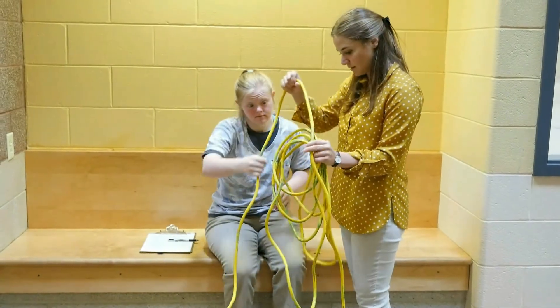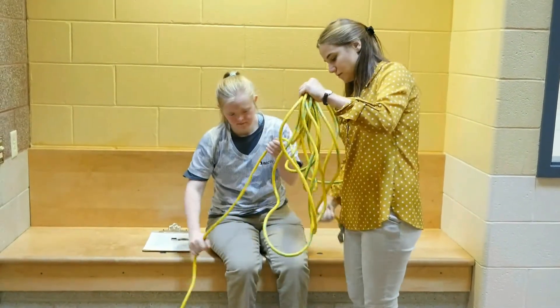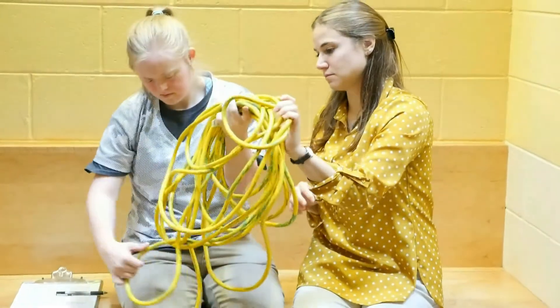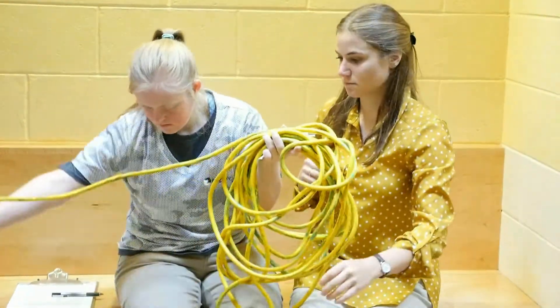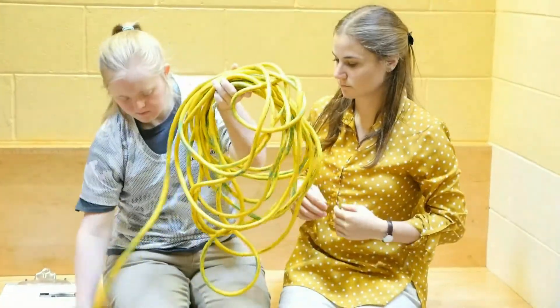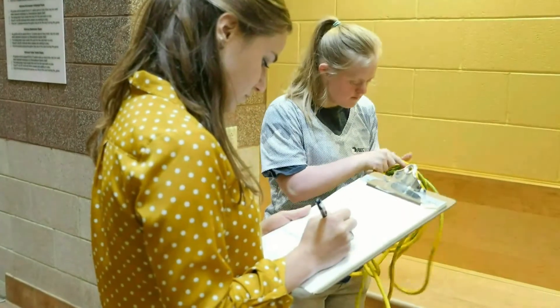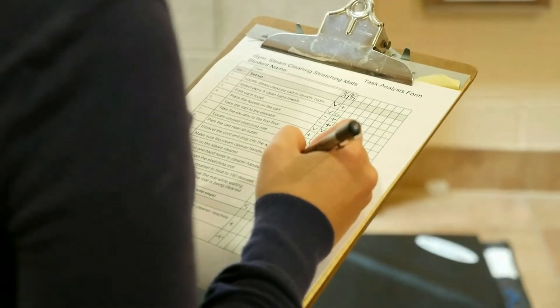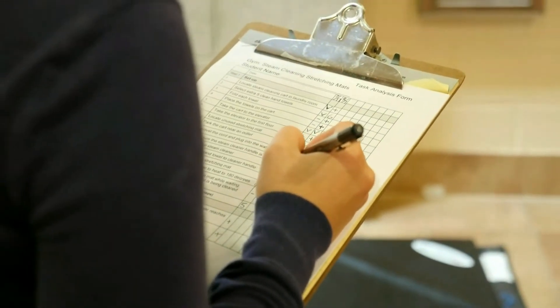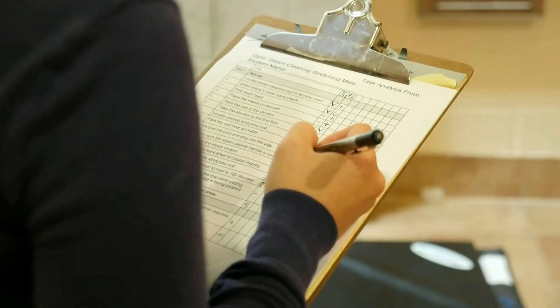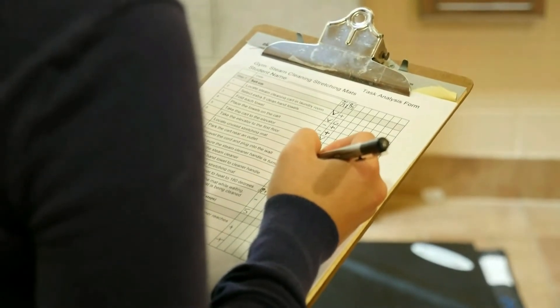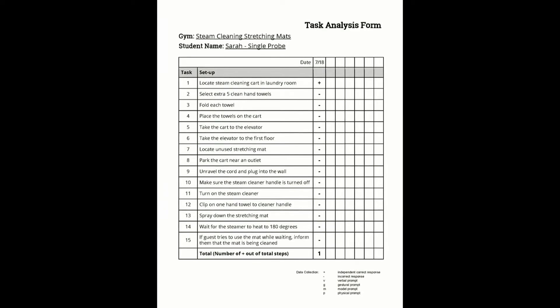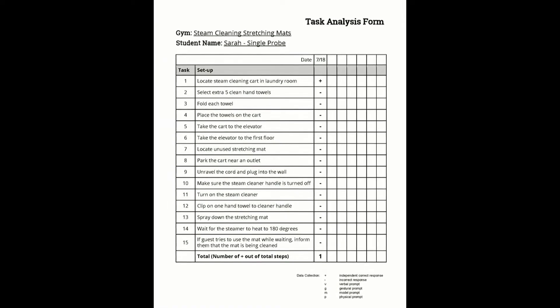To conduct a single opportunity probe, start by modeling the task for the student. Once the task has been modeled, guide the student to complete the task themselves. It is very important that no prompts or guidance is given to the student. Allow at least three to five seconds to see if the student is able to complete the first step on her own. For every step on the TA that the student successfully completes, place a plus sign. When the student makes a mistake on a step or does not initiate a step, place a minus sign at that step and all subsequent steps, and end the probe.